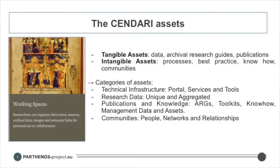So what are the things that a research infrastructure has, builds, and offers for reuse — the asset classes? On one hand you have tangible assets: things like the data, archival research guides, and other forms of publication, which usually already have somewhere they're available. But there are also intangible assets: the processes, best practice, know-how, and communities. Very often these are the things we lose at the end of a project.